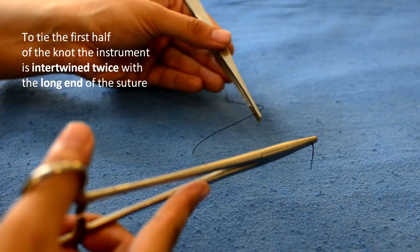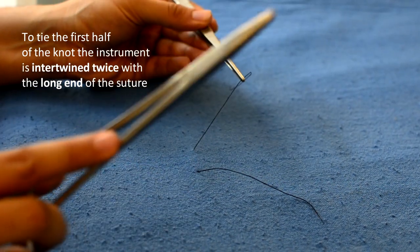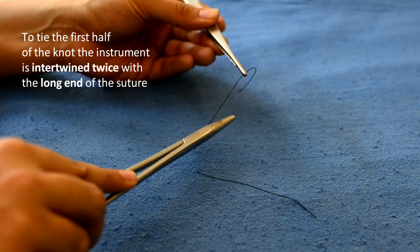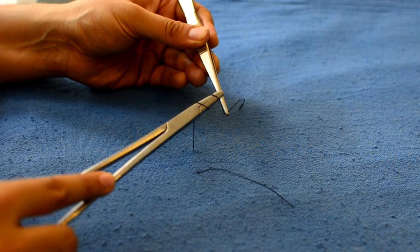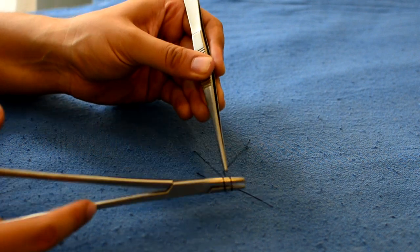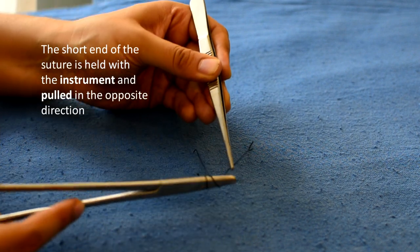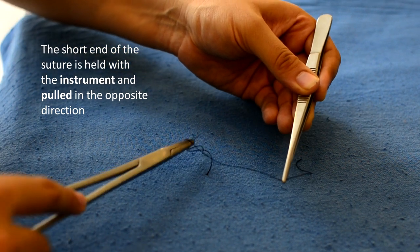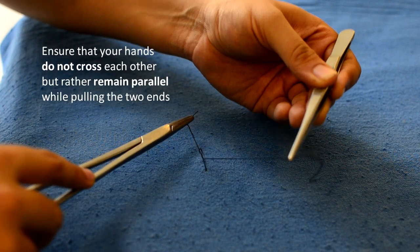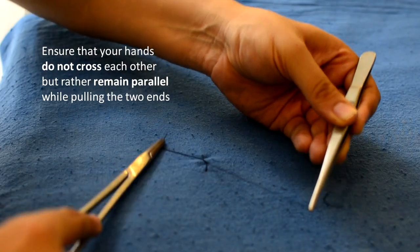To tie the first half of the knot, the instrument is intertwined twice with the long end of the suture. The short end is held by the instrument and they are pulled in the opposite directions. At this point, it must be remembered that the hands should not cross each other. They should rather move in parallel planes.